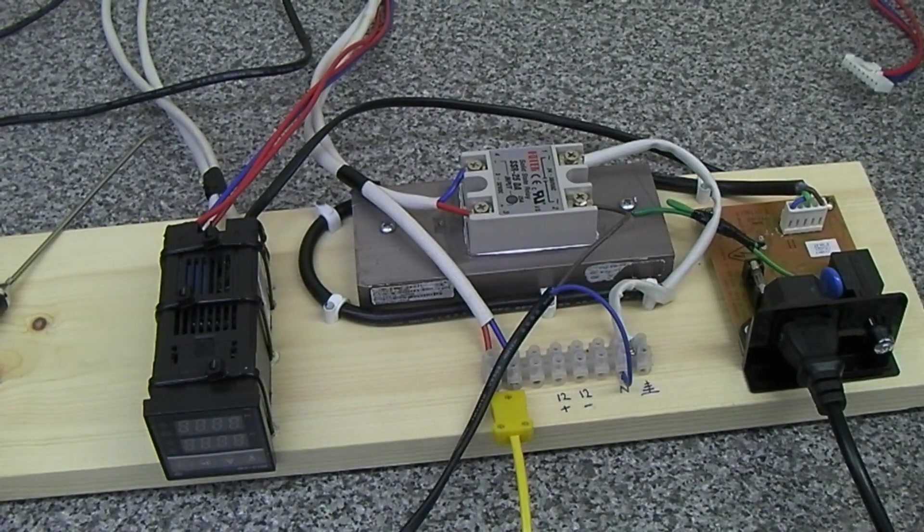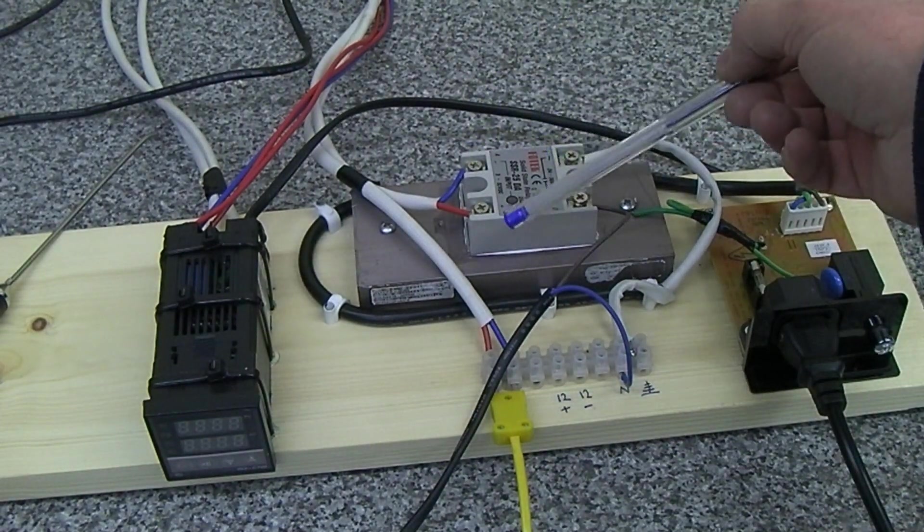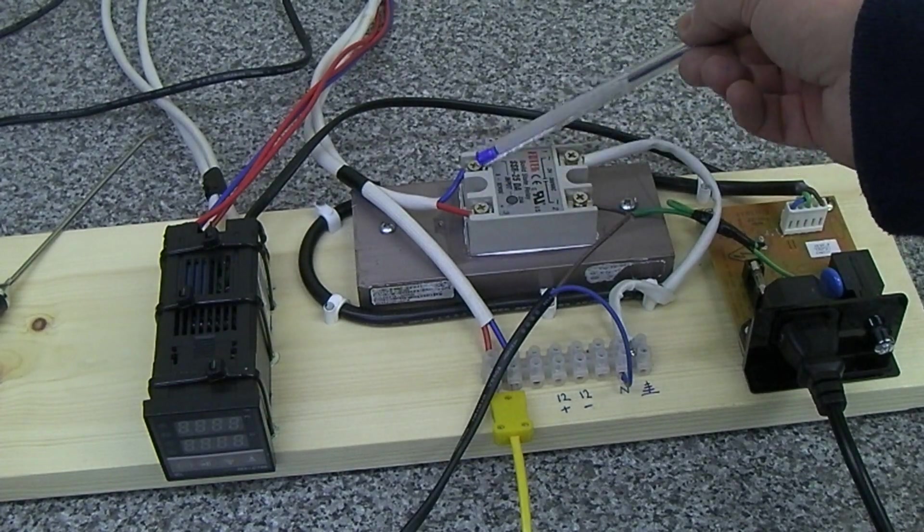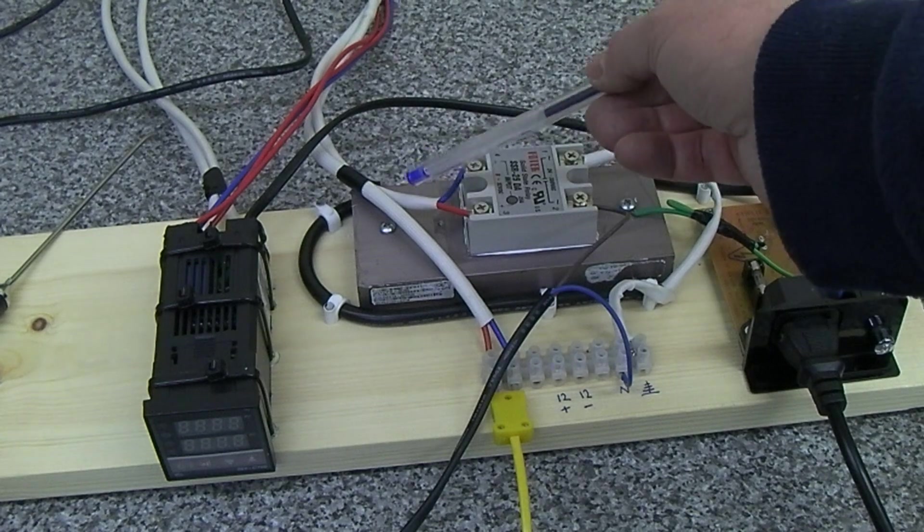Now we have pins three and four—basically the 12 volt supply, the switching supply that was powering that relay in the PID before. Pin three is positive, pin four is negative.